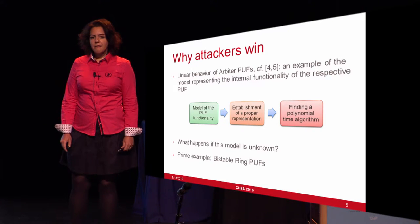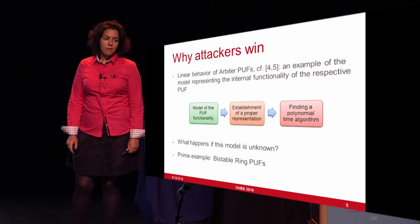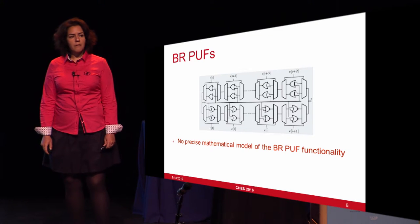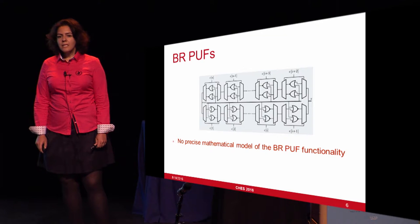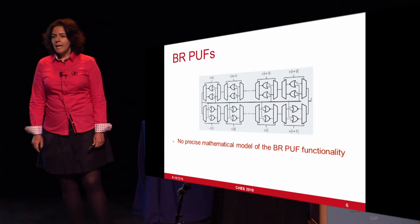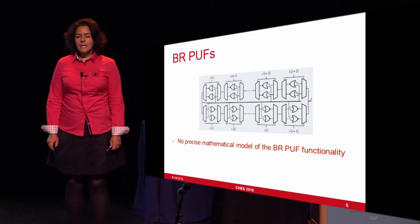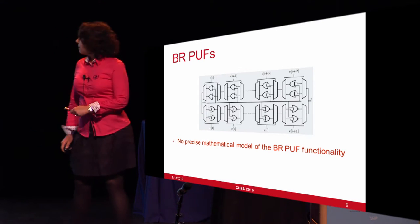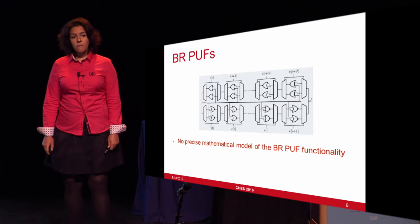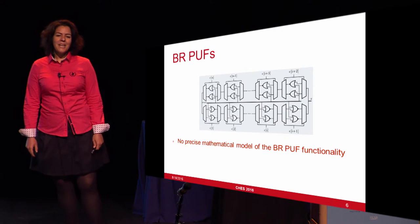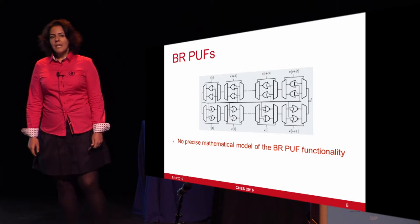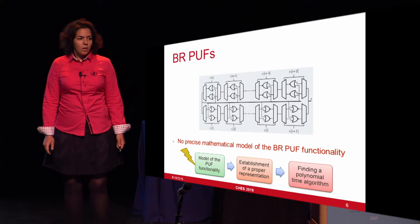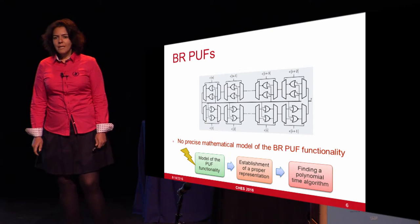But what happens if such a model cannot be found — for example, in the case of bistable ring PUFs? A bistable ring PUF consists of an even number of stages connected in a loop, and in each stage we have two NOR gates. By applying a challenge, one of these NOR gates is selected, and when the oscillation in the loop stops, we can read the response. Unfortunately, from the point of view of the attacker, no precise mathematical model for this PUF has been found so far. But does it mean that we cannot launch our PAC learning attack?